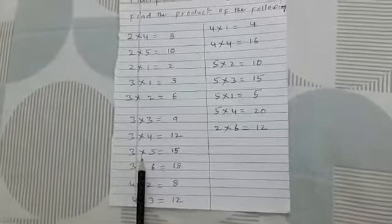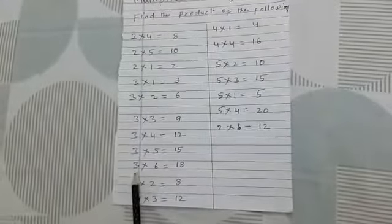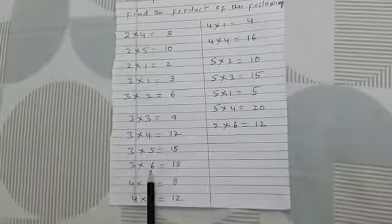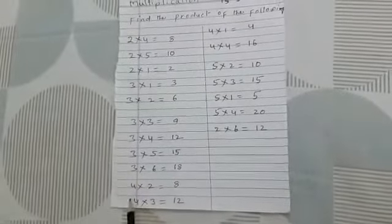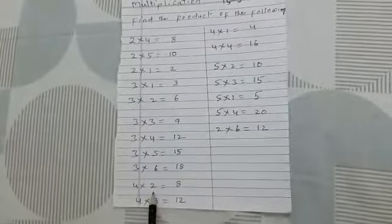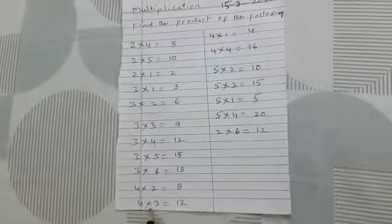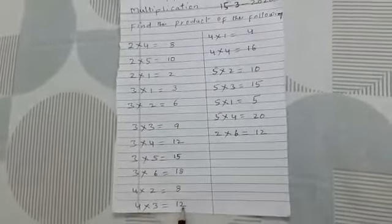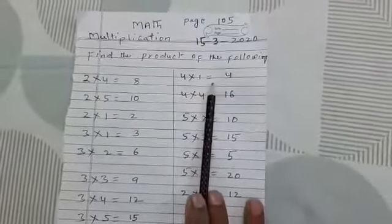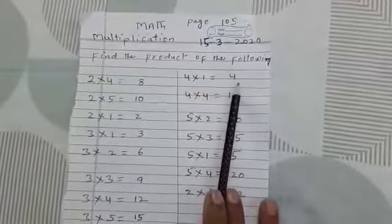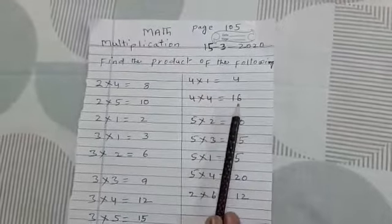3 multiplied by 5 is equal to 15. 3 multiplied by 6 is equal to 18. 4 multiplied by 2 is equal to 8. 4 multiplied by 3 is equal to 12. 4 multiplied by 1 is equal to 4. 4 multiplied by 4 is equal to 16.